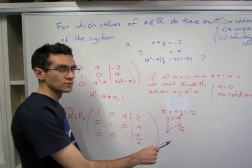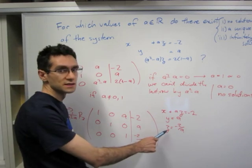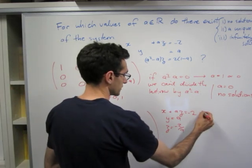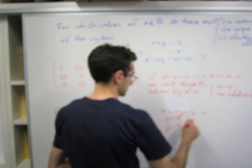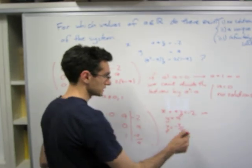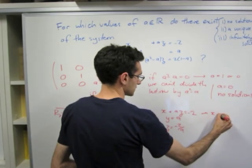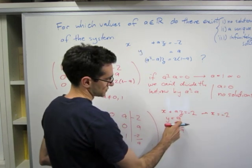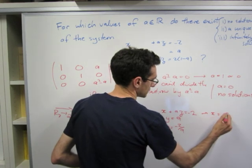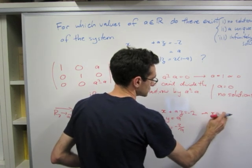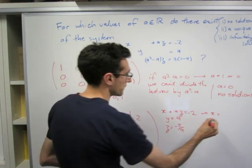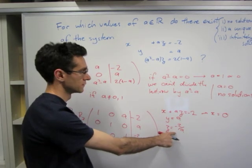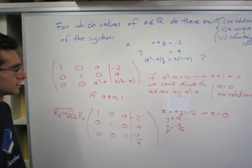You can see here why when a is 0, we don't have a solution, because that would imply that z here was infinite. And we can rearrange this one. So we get, if we stick z equals to minus 2 over a in here, we get x equals minus 2. Minus 2 is here, cancel. In fact, we get x equals to 0. Given that z is here, minus 2 over a. And there you have it.